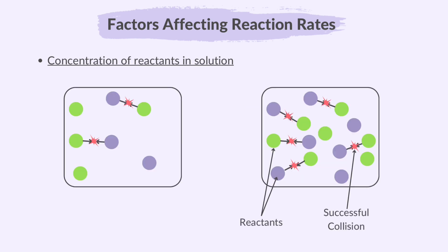In the diagram on your right, you will notice that there is a higher concentration of reactants than in the diagram on your left. There are more reactant particles in the same given volume on your right. Therefore, there are more chances of a successful collision happening between the reactants on the right side.